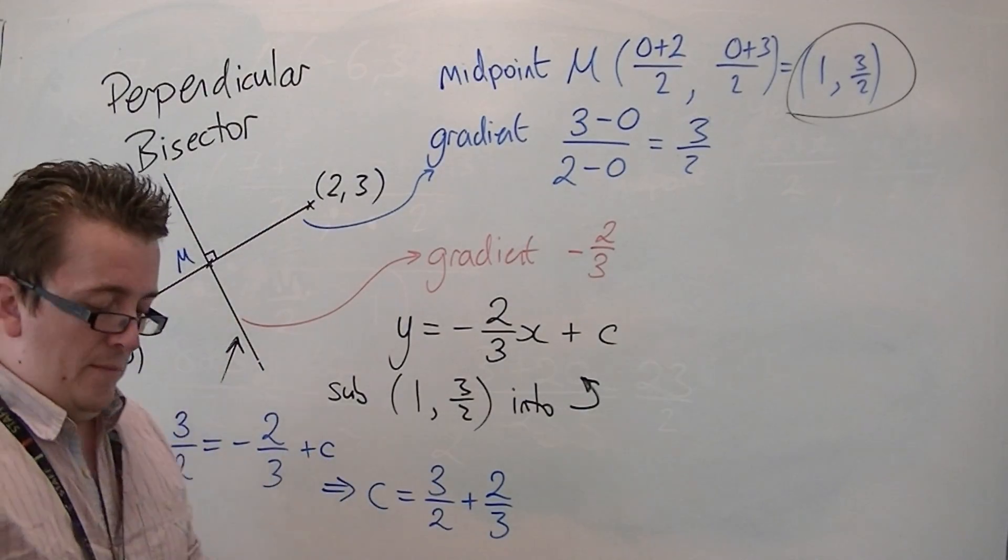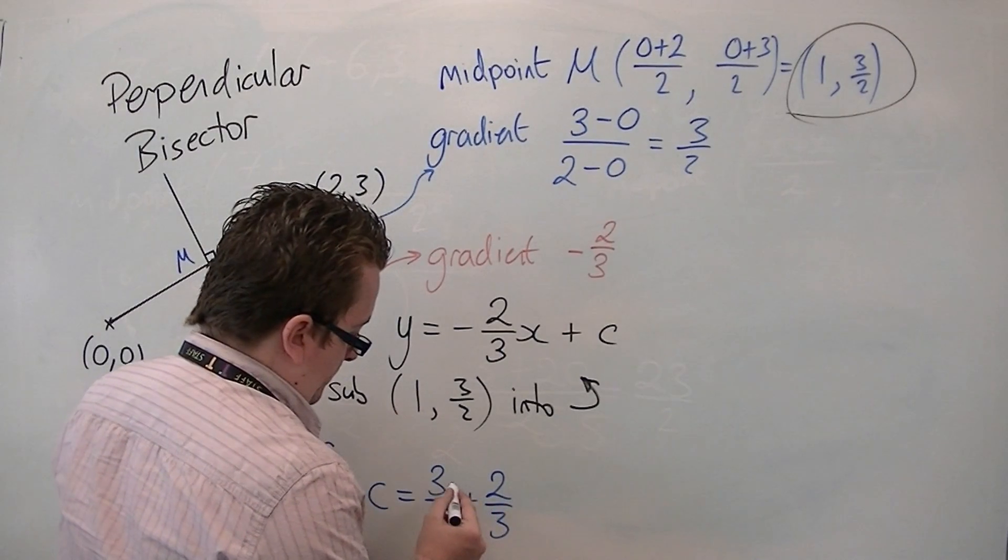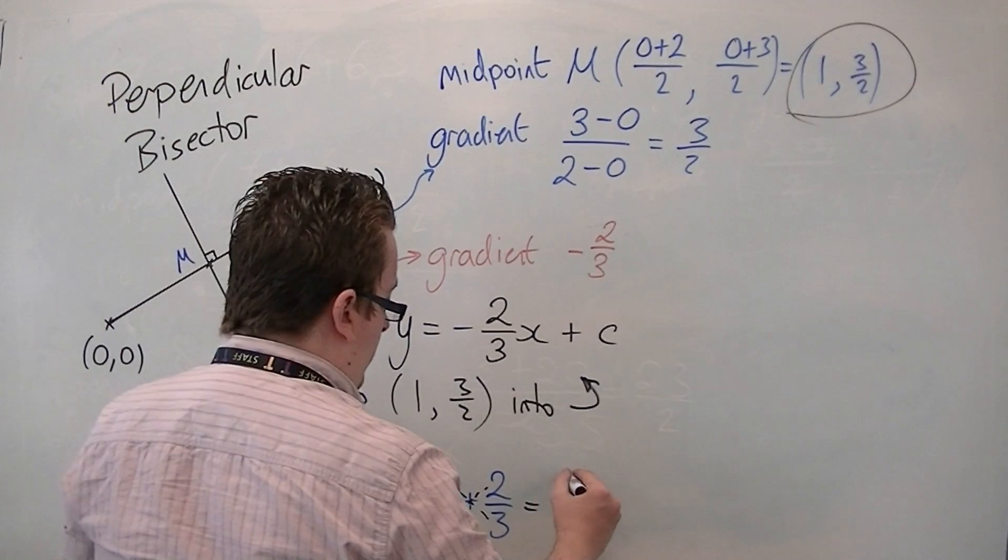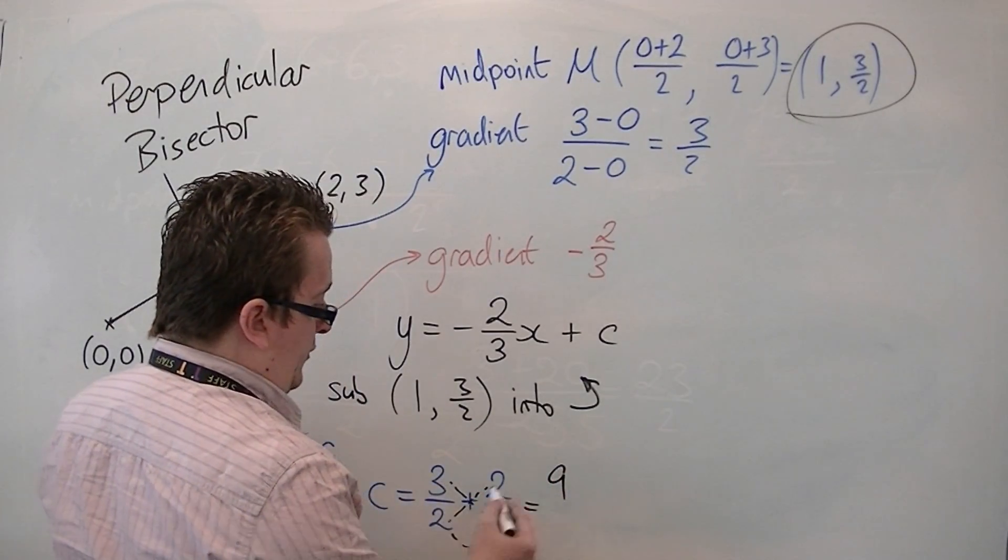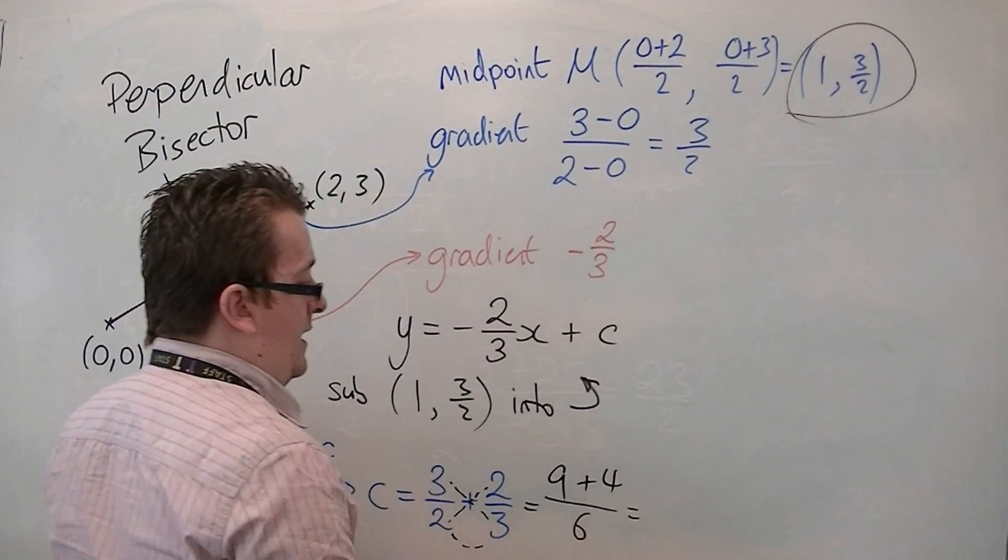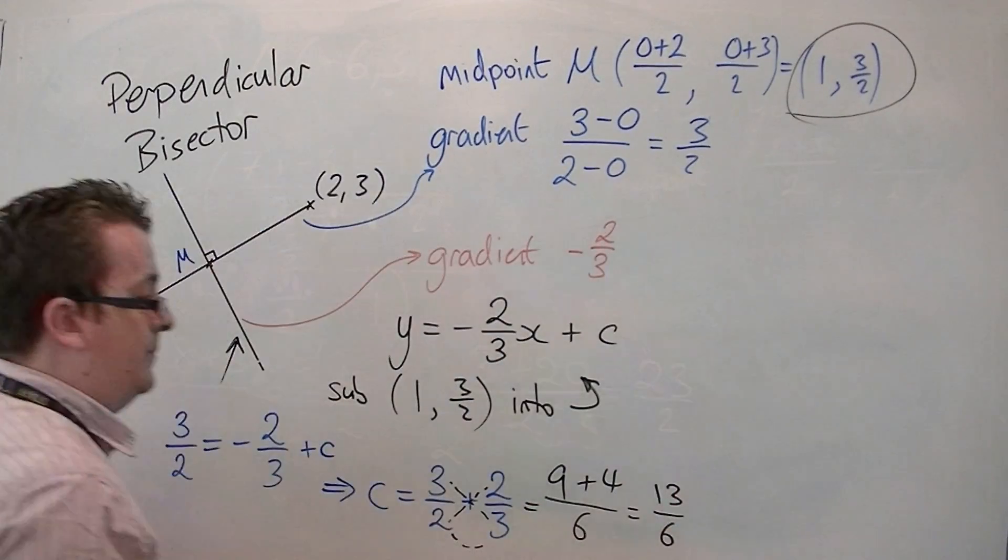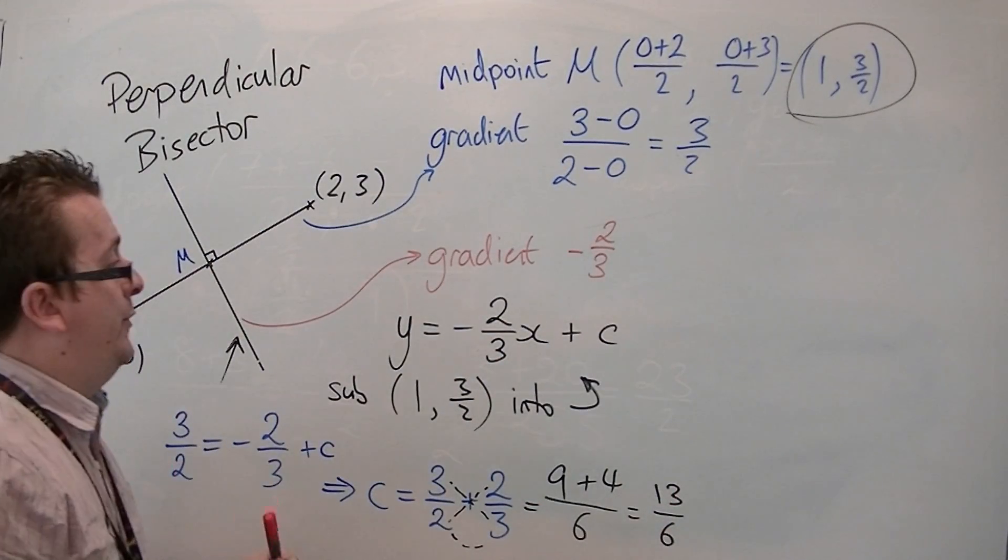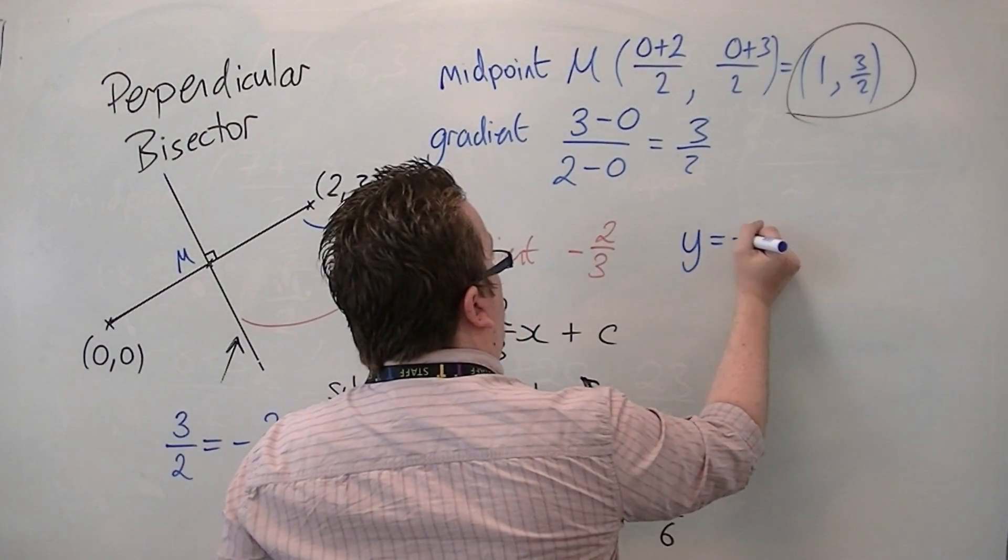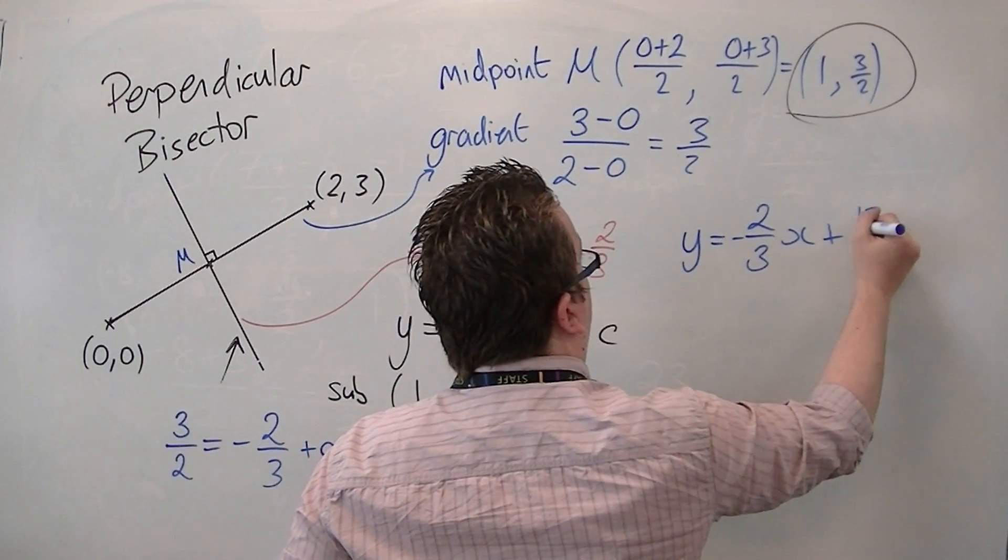You're going to have to remember how to add fractions here. So, a bit of cross multiplication. We have 3 threes is 9 plus 2 twos is 4 over 2 times 3 is 6. So, 9 plus 4 is 13, so that's 13 sixths. So, we can now say that the equation of the perpendicular bisector is minus 2 thirds x plus 13 over 6.